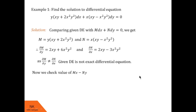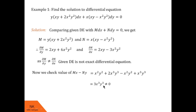We get Mx − Ny = x²y² + 2x³y³ − x²y² + x³y³. The x²y² terms cancel, and 2x³y³ + x³y³ = 3x³y³. Therefore Mx − Ny = 3x³y³ ≠ 0, so the corresponding integrating factor is 1/(Mx − Ny) = 1/(3x³y³).